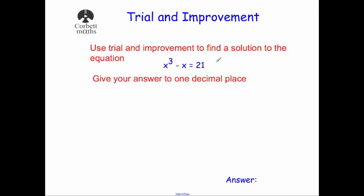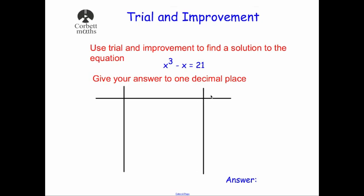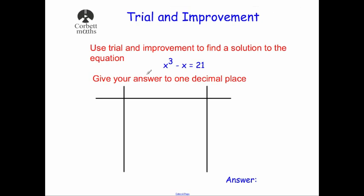Let's do another example. This time the question says: use trial and improvement to find a solution to the equation x cubed minus x equals 21, giving your answer to one decimal place. This time they didn't draw a table for us, so I'd recommend getting your ruler and drawing your table. The first column is x — that's the number we're going to try. The next column is what we're working out: x cubed minus x. And the last column is called comment.